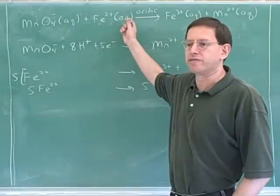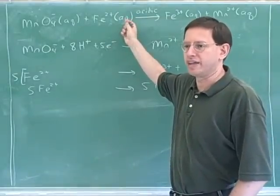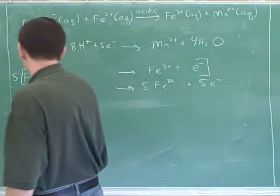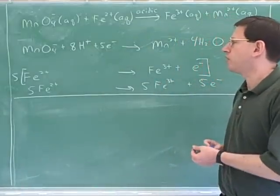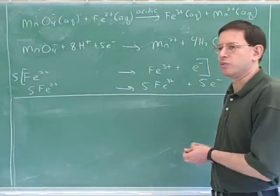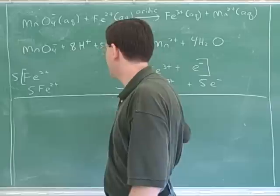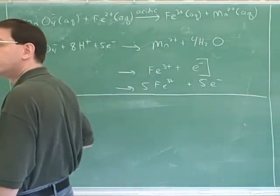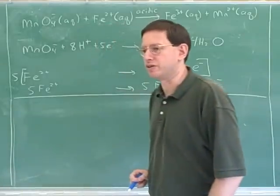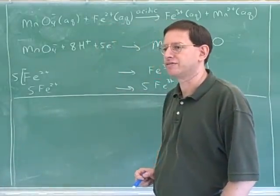Now we're ready to add these together and get the overall equation. That was our goal all along, right? To get the overall equation. The half reactions were just a trick. So let's write down what all of our starting materials will be now. What's one of the starting materials we'll get when we add these together?